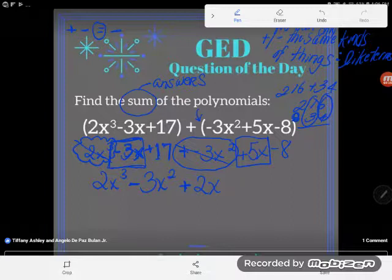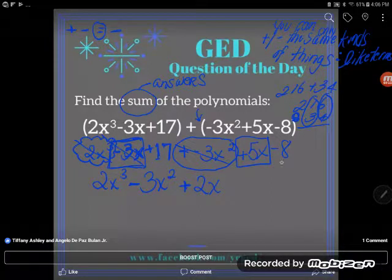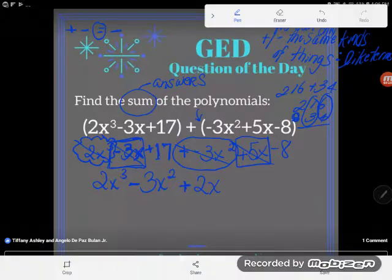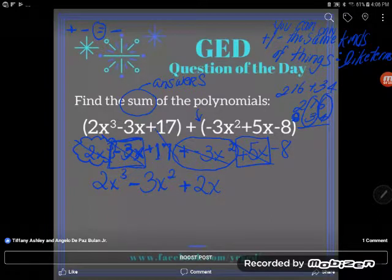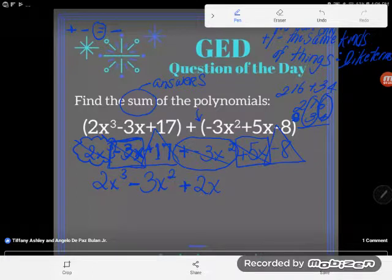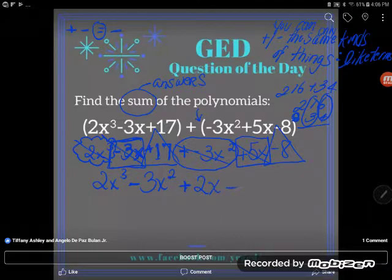Great. Now I'm almost done. The last thing you should deal with after you've dealt with all your x terms is to deal with your constants, your plain old numbers. You can see I have two constants here: I have a plus 17 and I have a negative 8. So this is like I have 17 dollars but I take away 8 - 17 minus 8 would be positive 9.